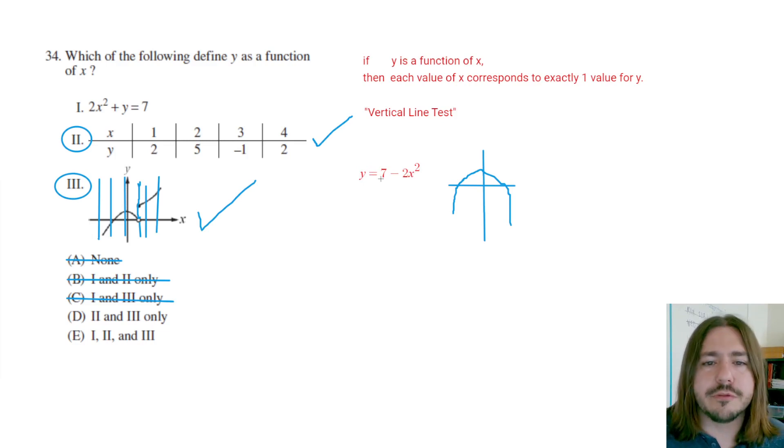So this definitely would be a function. What you want to look out for, as far as a similar example where the equation would not be a function, is if the square was on the y, and we would end up having an equation like this, like x equals, or let's say it was like 2x plus y squared equals seven.